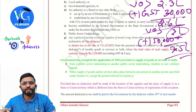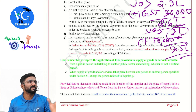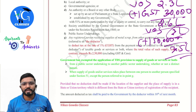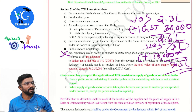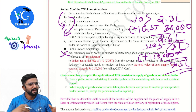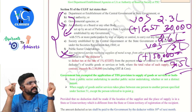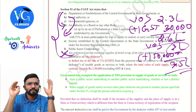Government has exempted the application of TDS provisions where supply of goods or services is from a public sector undertaking to another public sector undertaking — no TDS. Also, when supply takes place between persons both specified under section 51 (except the metal scrap person in category G) — for example, government department supplying to local authority — no TDS. But if it's a government department and a supplier of scrap, TDS is applicable.